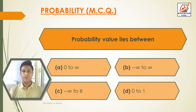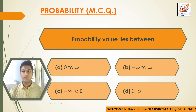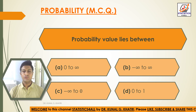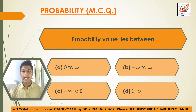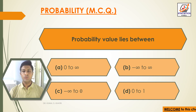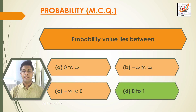Question 6: Probability value lies between? Option A: 0 to infinity. Option B: Minus infinity to infinity. Option C: Minus infinity to 0. Option D: 0 to 1. Answer: Option D — Probability value lies between 0 to 1.